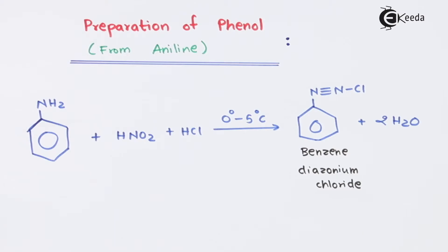But this is not the final thing that we need. We need phenol. So the benzene diazonium chloride will be treated with dilute sulfuric acid so as to obtain the main product.